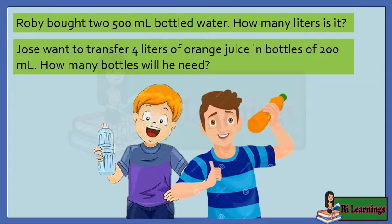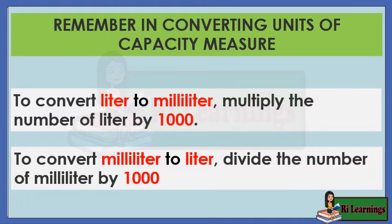Roby bought two 500-milliliter bottles of water. How many liters is it? Jose wants to transfer 4 liters of orange juice into 200-milliliter bottles. How many bottles will he need? Remember, in converting units of capacity measure: to convert liters to milliliters, multiply by 1,000. To convert milliliters to liters, divide by 1,000.